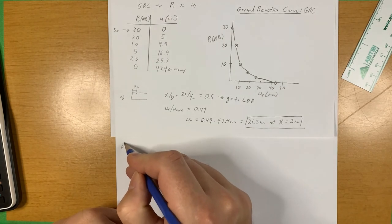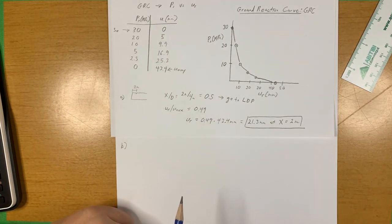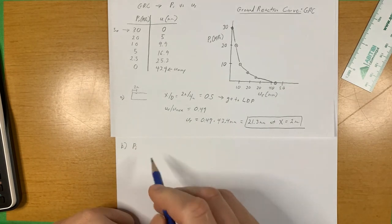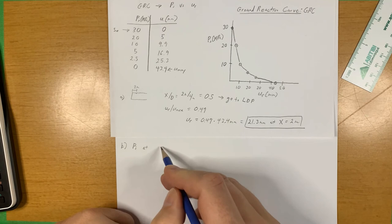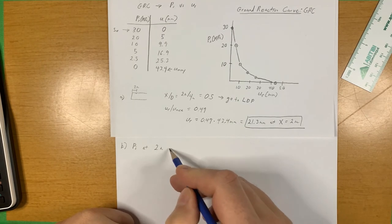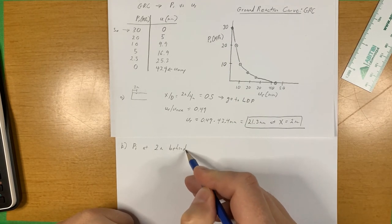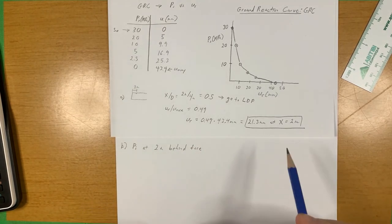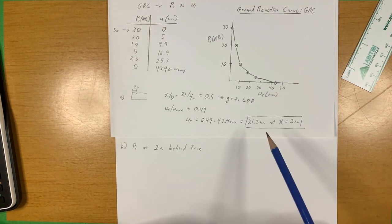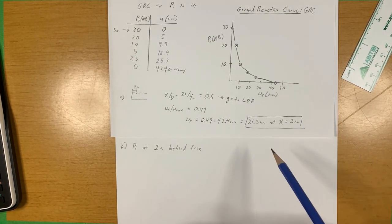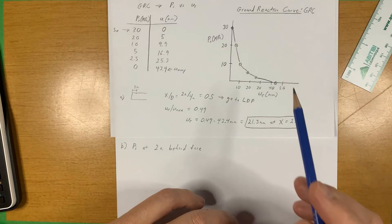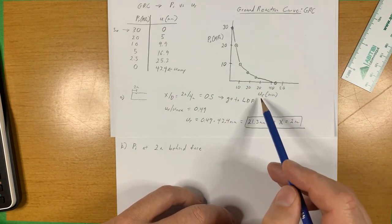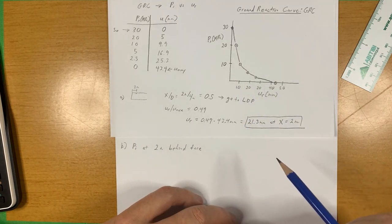21.3 millimeters at a distance of 2 meters behind the tunnel face. Part B asks us what's the internal pressure at 2 meters behind the tunnel face.